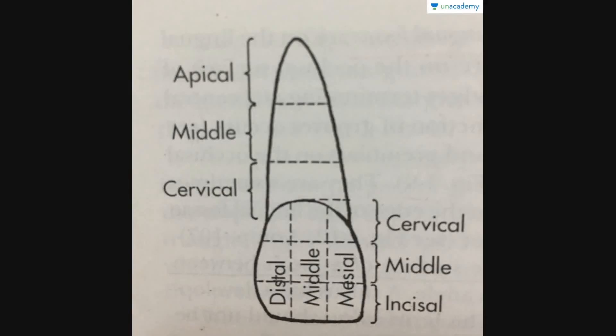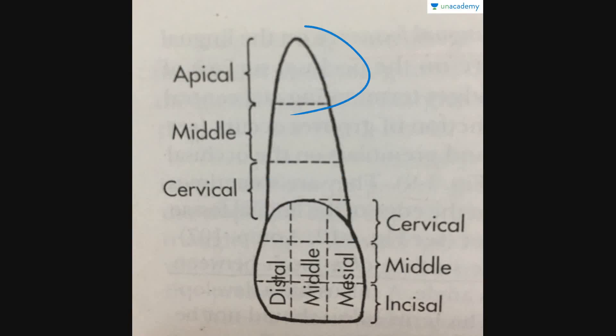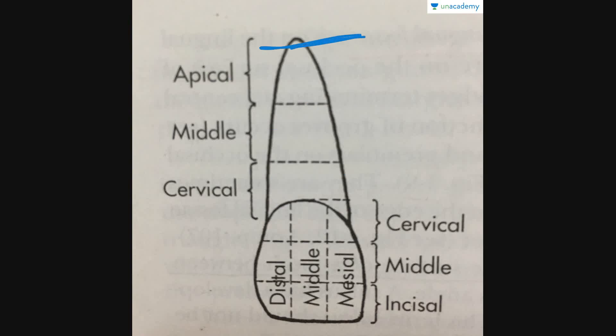Now comes the root. The root is also divided into three parts. Starting from the CEJ, this becomes the cervical portion of the root. Then comes the middle portion, and finally the apical portion — this is the apex of the root. So we have the apical portion, middle portion, and cervical portion.